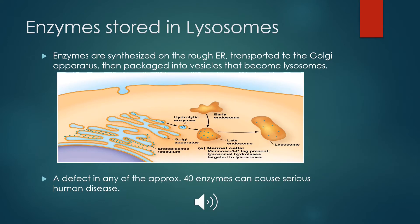There are approximately 40 enzymes inside the lysosome. These enzymes are synthesized on the rough endoplasmic reticulum and then transported to the Golgi apparatus, where they are packaged into vesicles that later become lysosomes. If there are any defects in any of the 40 enzymes, it will affect the rate of degradation of cellular processes, and therefore cause serious risks to the health of the organism.